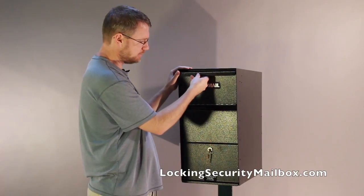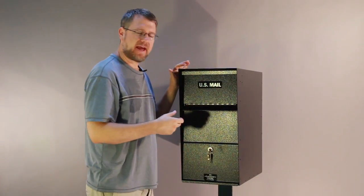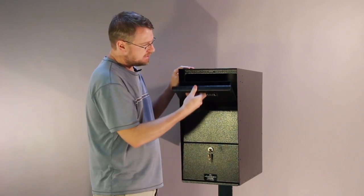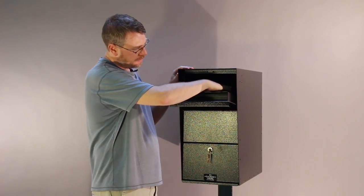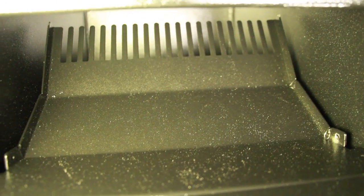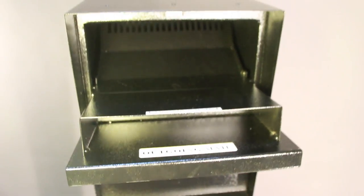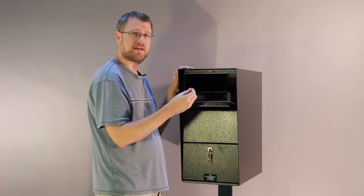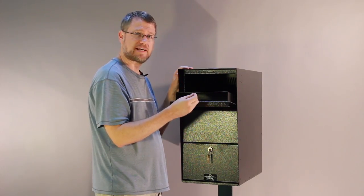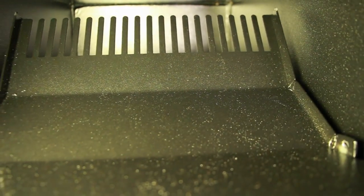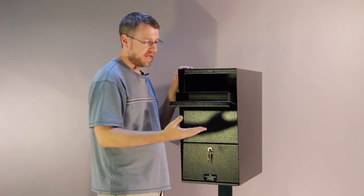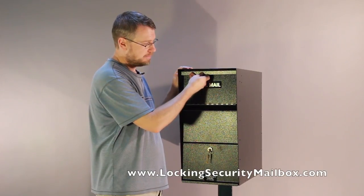It also has an anti-fishing device. Instead of the Hopper Door in the back just being flat, there's little fingers that come out. When someone tries to fish items out with a string with something tacky on the end, or a coat hanger with something sticky on the end, when they try to pull it back, it gets caught in those fingers and the items drop back in, and they're not able to fish out your mail.